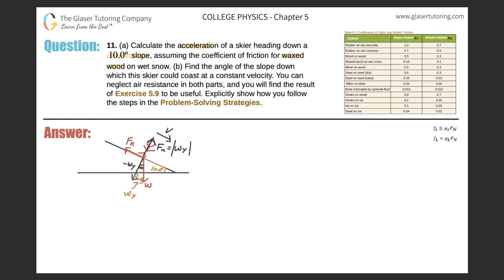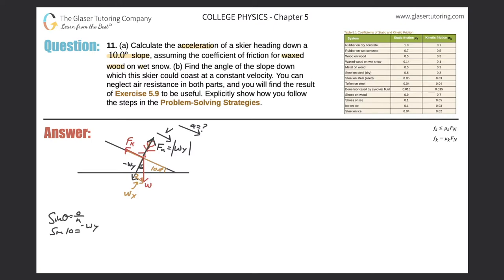Now let's find the x-components. The acceleration should be pointing downhill, so I need the sum of forces in the x direction. To find W_x in terms of the weight W, I use sine: sin(θ) = opposite/hypotenuse, so sin(10°) = W_x / W, which gives W_x = W·sin(10°).